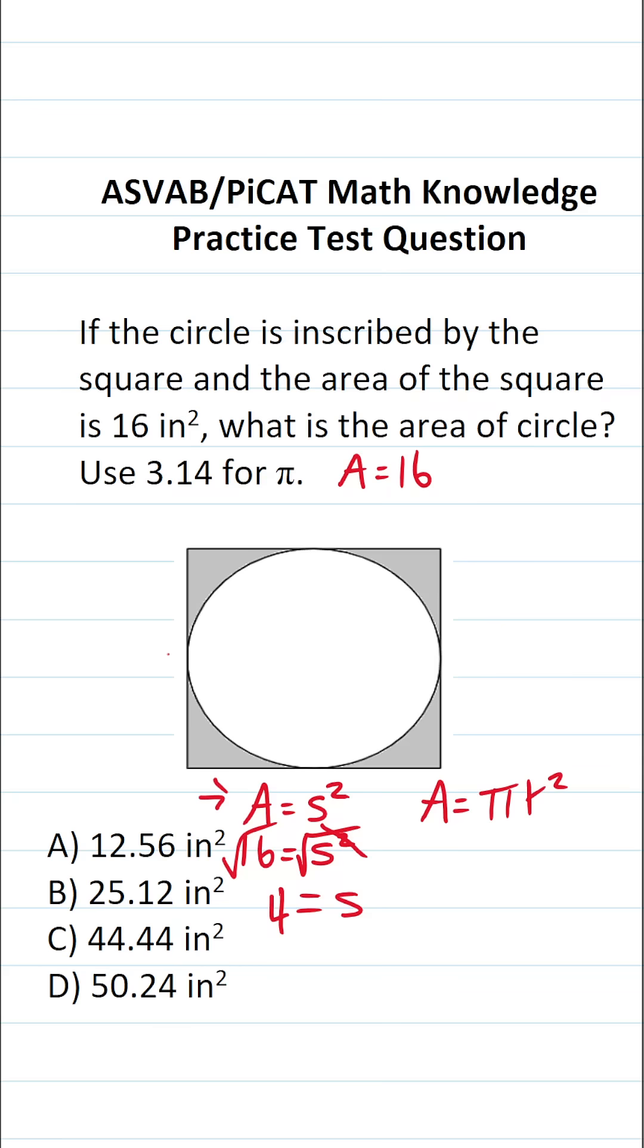All right, so again, s refers to the side length of the square and in squares, all the sides are equal. So if one side's 4, they're all going to be 4.